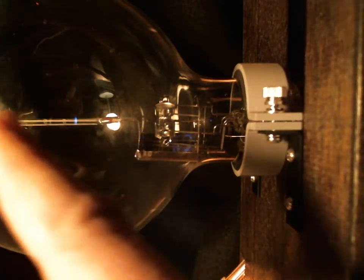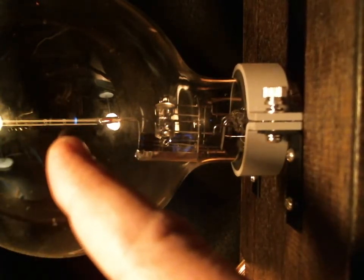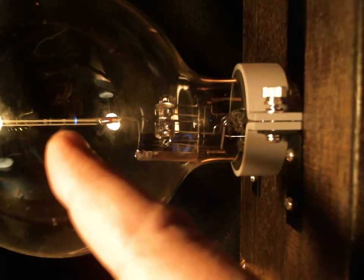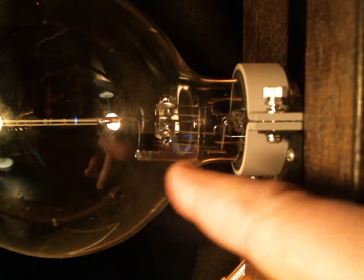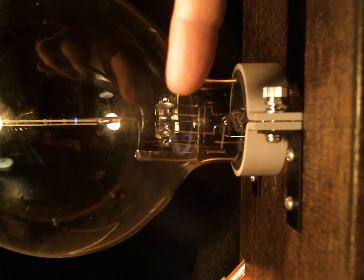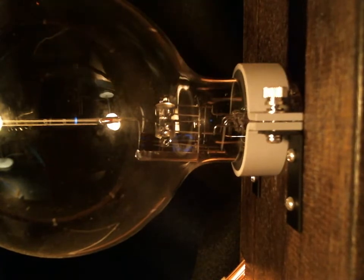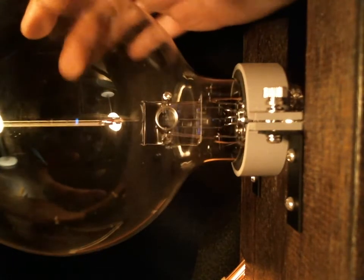That thing there that looks like a fever thermometer is a glass rod that's used for measuring things inside the tube. But the things to focus on are this metal plate and this other piece of metal up here which is sort of shaped like a cup. I can turn it toward you so you can see it better.